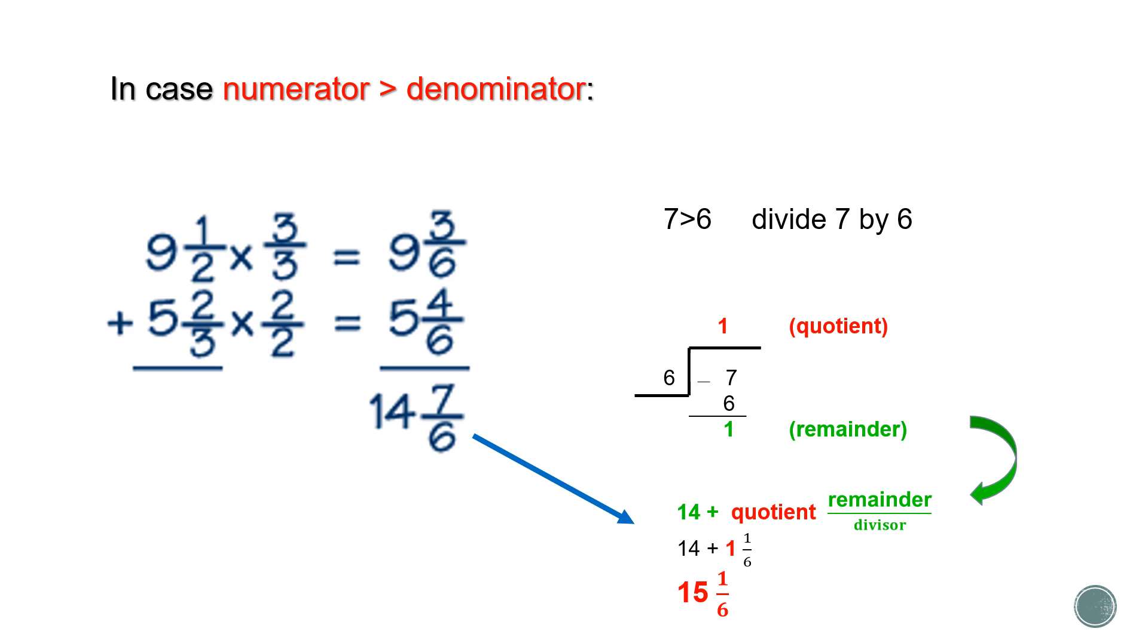Now, to finalize our answer, you add the whole number, which is 14, to the quotient and to the remainder divided by the divisor. In our example, the remainder is 1 and the divisor is 6. So, 14 is added to 1 and 1 over 6 and we get the final answer, which is 15 and 1 over 6.